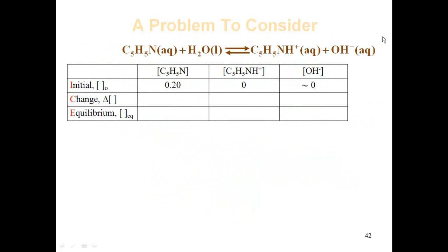You have your base reaction. You know this is a base and water is the acid, so the acid donates a proton. The neutral species C5H5N gains an extra H⁺. Then water loses a proton, giving OH⁻. Using your Bronsted-Lowry concept, you should be able to write those reactions easily. Set up the ICE table: initial concentration of 0.2, zero for the conjugate acid, and approximately zero for hydroxide — we're neglecting water's contribution.